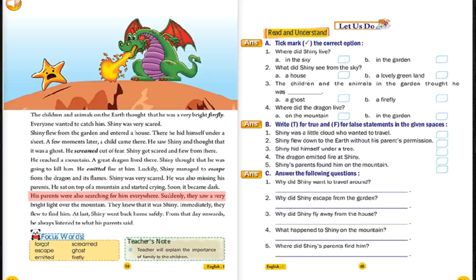His parents were also searching for him everywhere. Suddenly, they saw a very bright light over the mountains. They knew that it was Shiny. Immediately, they flew to find him. At last, Shiny went back home safely. From that day onwards, he always listened to what his parents said.